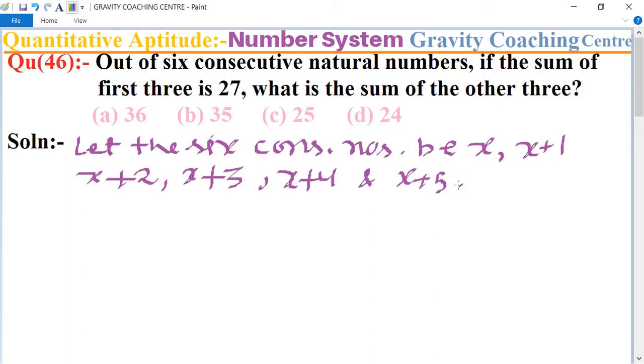According to the question, the sum of first three is 27. So according to the question, the first three numbers are x plus x+1 plus x+2.